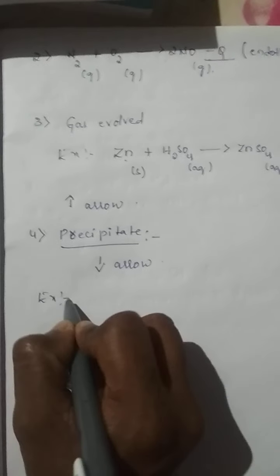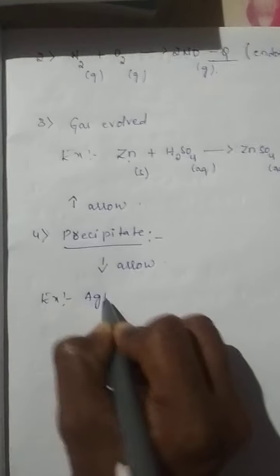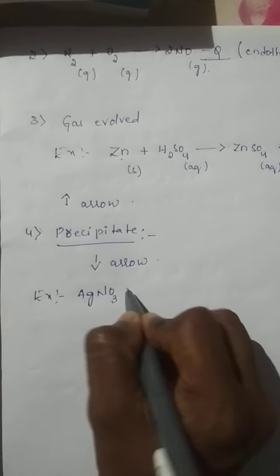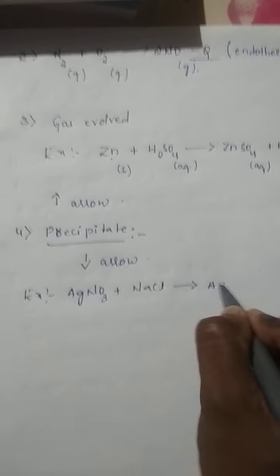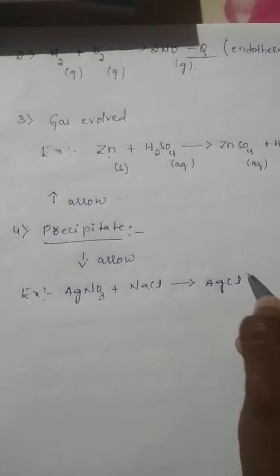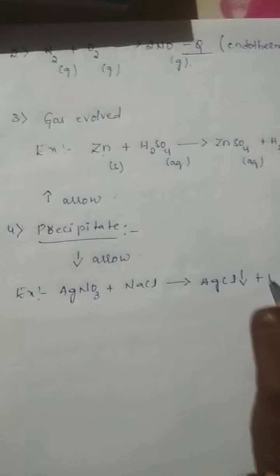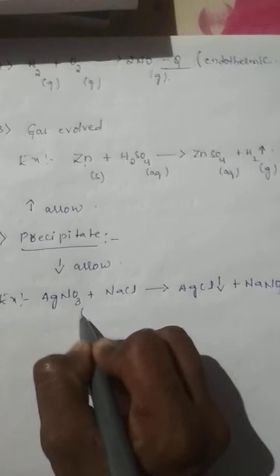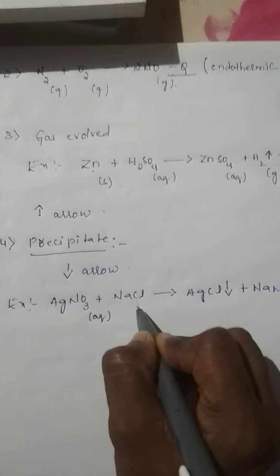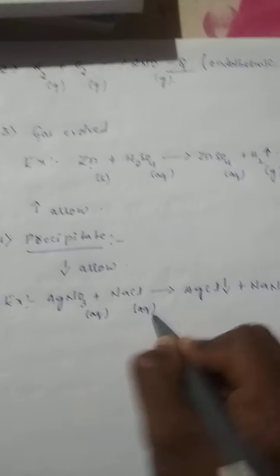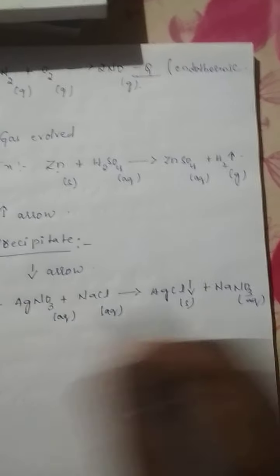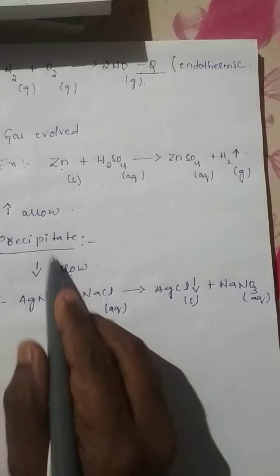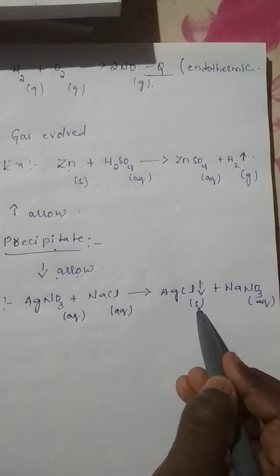For this example, AgNO3 plus NaCl gives rise to AgCl downward arrow. Here, first we will express the states. This is aqueous solution, this is also aqueous solution, this is solid, this is aqueous solution. Here, what I said, downward arrow indicates precipitate. Here downward arrow is indicating precipitate.